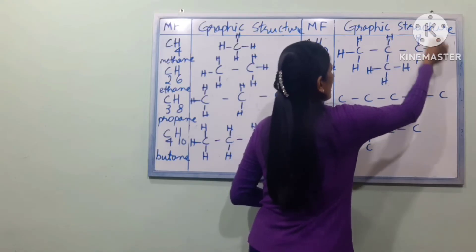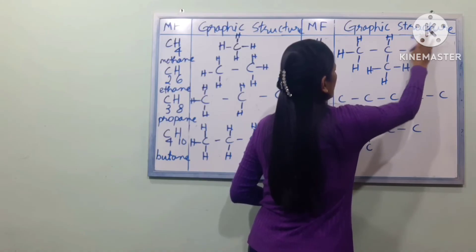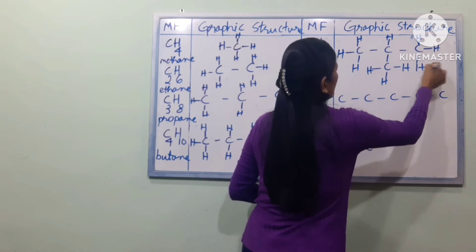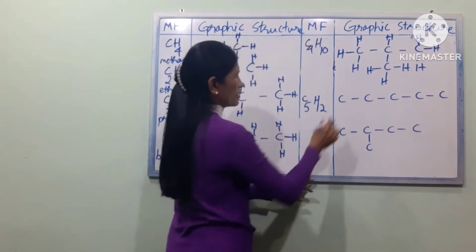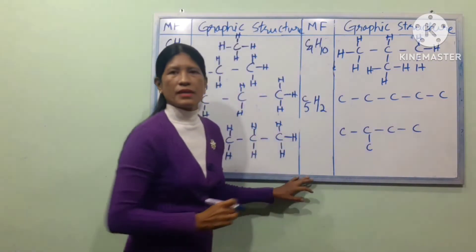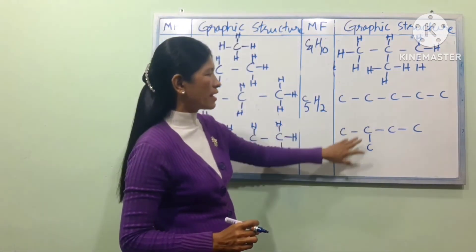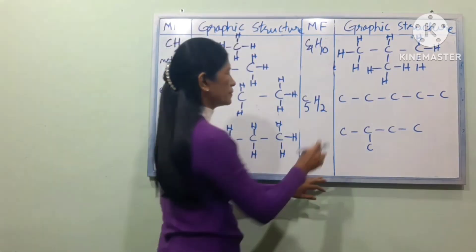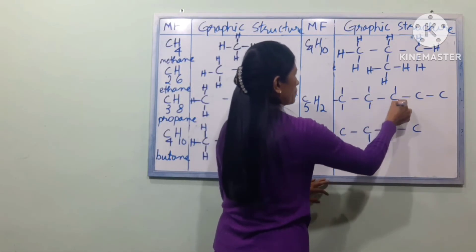Let's take a look at C4H to make a graphic structural formula. This is a little bit easier. Here we go — now we're going to do the same thing.